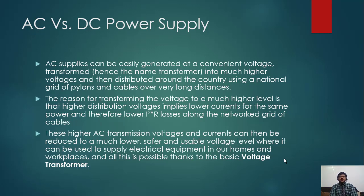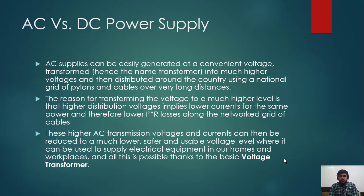The losses appear in the form of heat, so the conductor starts to heat up, and this heating puts a limit on the current carrying capacity of the conductor itself. That's why it is said that if you can keep a conductor cold, you can increase the current. These higher AC transmission voltages and currents can then be reduced to a much lower, safer, usable voltage level where it can supply electrical equipment in our homes and workplaces - all thanks to the basic voltage transformer.